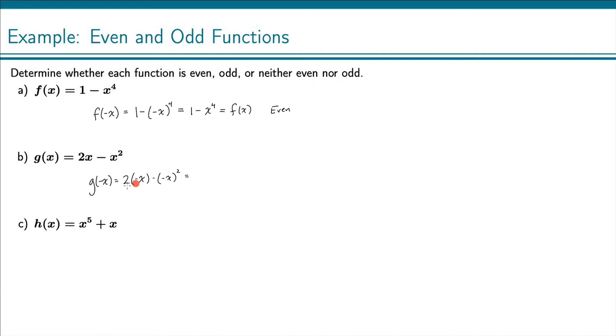So 2 times negative x is −2x, and then minus here we have a negative squared, which is positive, so that just becomes x squared.